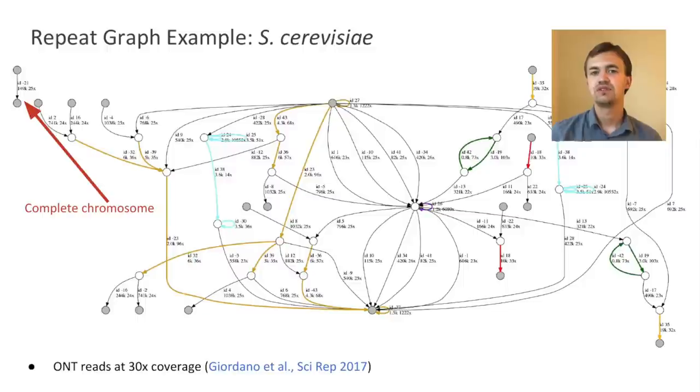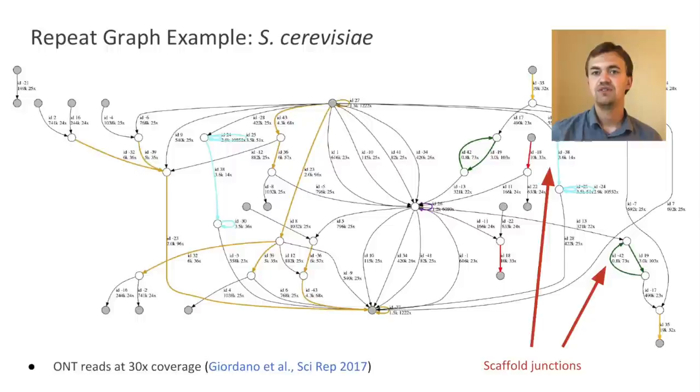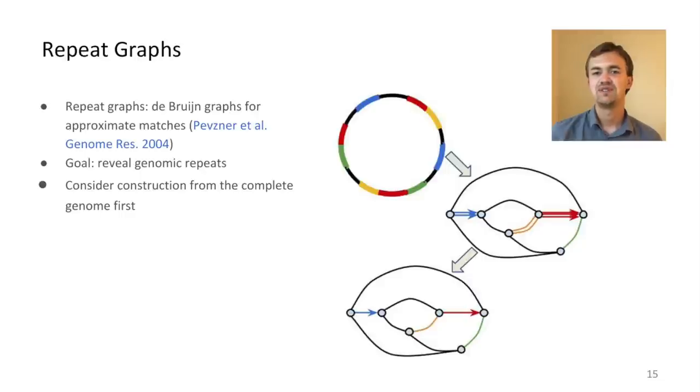Those are separate complete chromosomes. And sometimes even if the repeats are unresolved and not bridged by reads, the order of the unique sequence is defined through the graph structure. And this information can be used to scaffold this unique sequence. So I hope I convinced you that assembly graphs are useful.